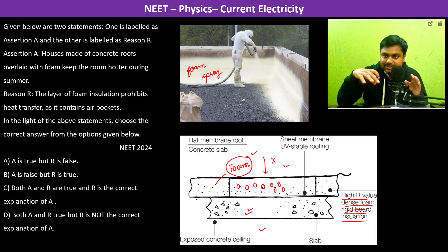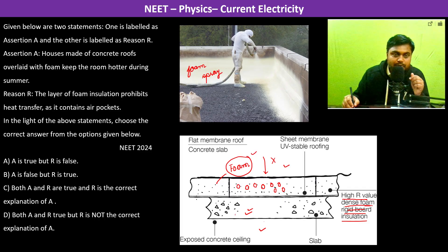Therefore, inside temperature is lower, inside it is cooler. Houses made of concrete roofs overlaid with foam keep the room hotter - no, not hotter. They keep the room cooler during summer.